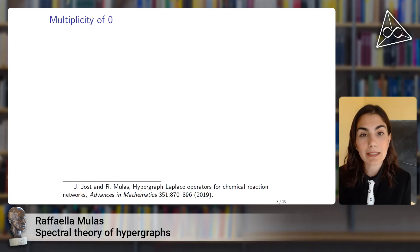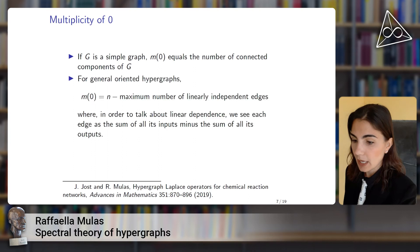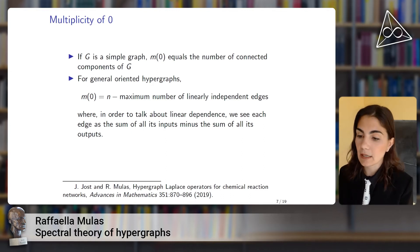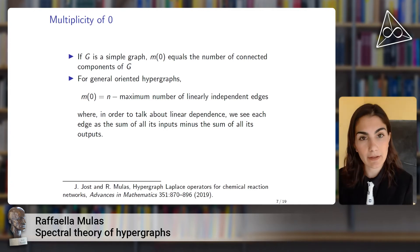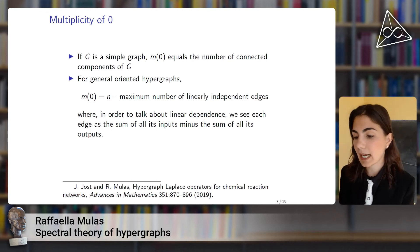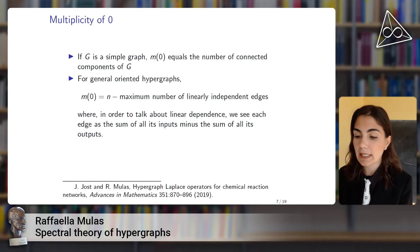Regarding the multiplicity of the eigenvalue zero: if G is a simple graph, then the multiplicity of zero always equals the number of connected components of G. More generally, for oriented hypergraphs this property is lost. In fact, we can have hypergraphs that don't have zero as an eigenvalue, while this never happens for graphs, and we can also have connected hypergraphs with a very high multiplicity of zero. In general, the multiplicity of zero equals the number of vertices minus the maximum number of linearly independent edges, where each edge is seen as the sum of all its inputs minus the sum of all its outputs.